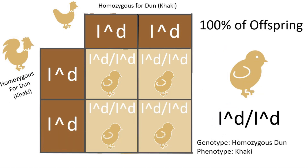And lastly, the sixth pairing is two homozygous Dunn or khaki chickens bred together. In this pairing, you should get 100% khaki offspring.